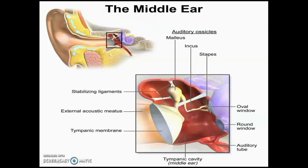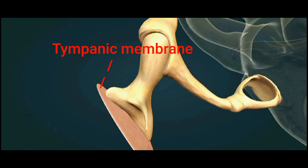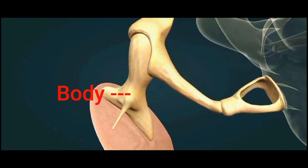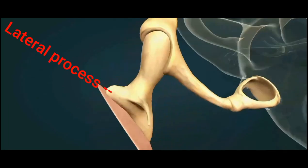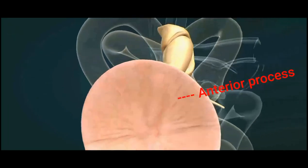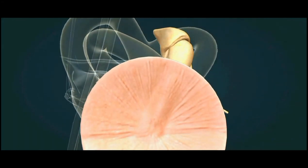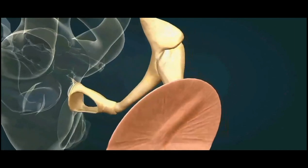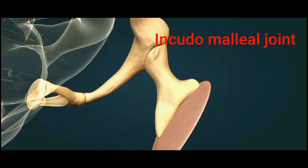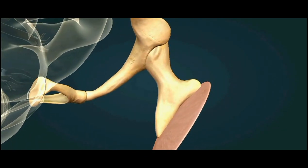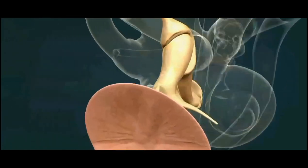You can notice how the malleus is suspended by the suspensory ligament from the epitympanum and also the scutum, with the tympanic membrane attached there. The parts visible are: head, neck, body, the lateral process, the sharp anterior process, and the handle of malleus attached to the tympanic membrane. From the lateral process there is attachment of two folds — anterior and posterior malleal folds — and posteriorly you can see the incudomalleal joint, a saddle variety of synovial joint.